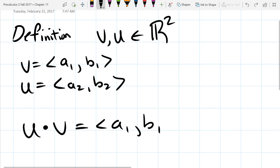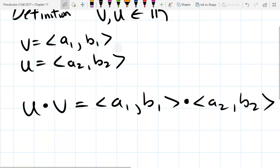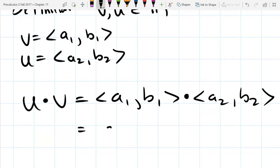But u dot v, all you're going to do is multiply the corresponding parts together, and then you're going to add up the products at the end. So it's going to be a1a2 plus b1b2.